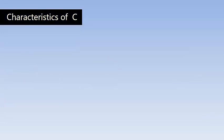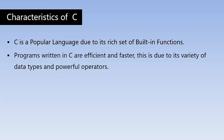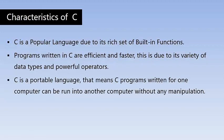Now let us discuss the characteristics of C. C is a popular language due to its rich set of built-in functions. C has a standard library where you can find hundreds of built-in functions — you don't need to write programs for every operation; you just call the functions from the library. Programs written in C are efficient and faster, due to its variety of data types and powerful operators. C is also a portable language, meaning C programs written for one computer can be run on another computer without any changes — all you need is a C compiler.